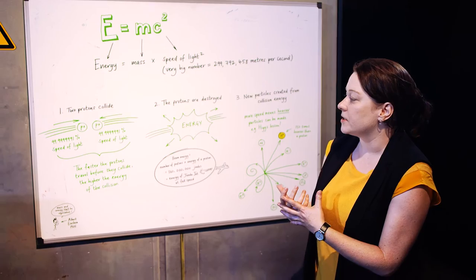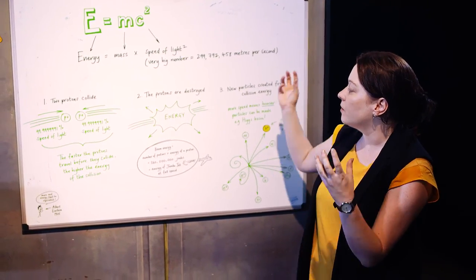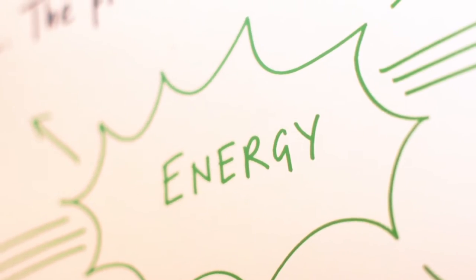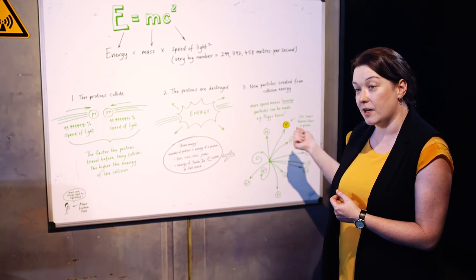If we have two particles colliding very quickly, when they collide they will destroy each other. All of that mass and the energy of the collision creates new energy, and from that energy we get all kinds of new particles created in every collision.